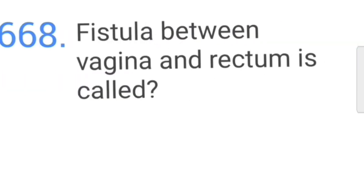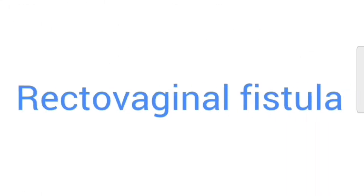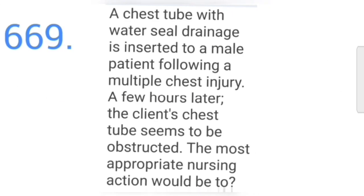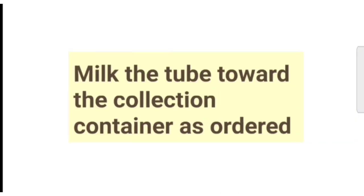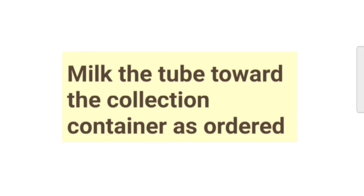The fistula between the vagina and rectum is called a rectovaginal fistula. A chest tube with water seal drainage is inserted in a male patient following multiple chest injury. A few hours later the client's chest tube seems to be obstructed; the most appropriate nursing action would be to milk the tube toward the collection container as ordered.